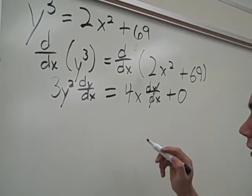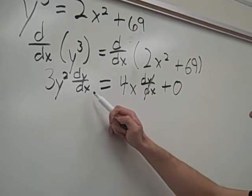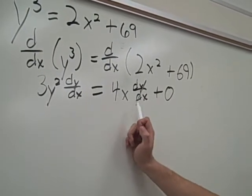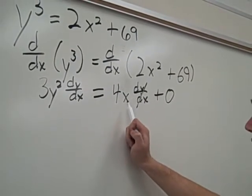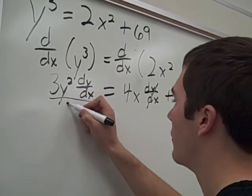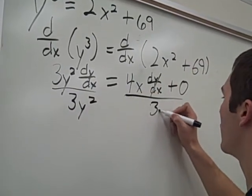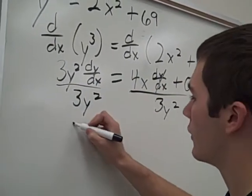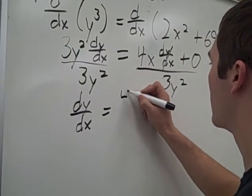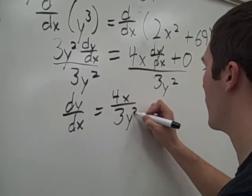Now, you want to get all your terms with dy dx on the same side, and all your terms without dy dx on the opposite side of the equation. Which this problem already has done, so then we just divide by 3y squared, giving us an answer, dy dx equals 4x over 3y squared.